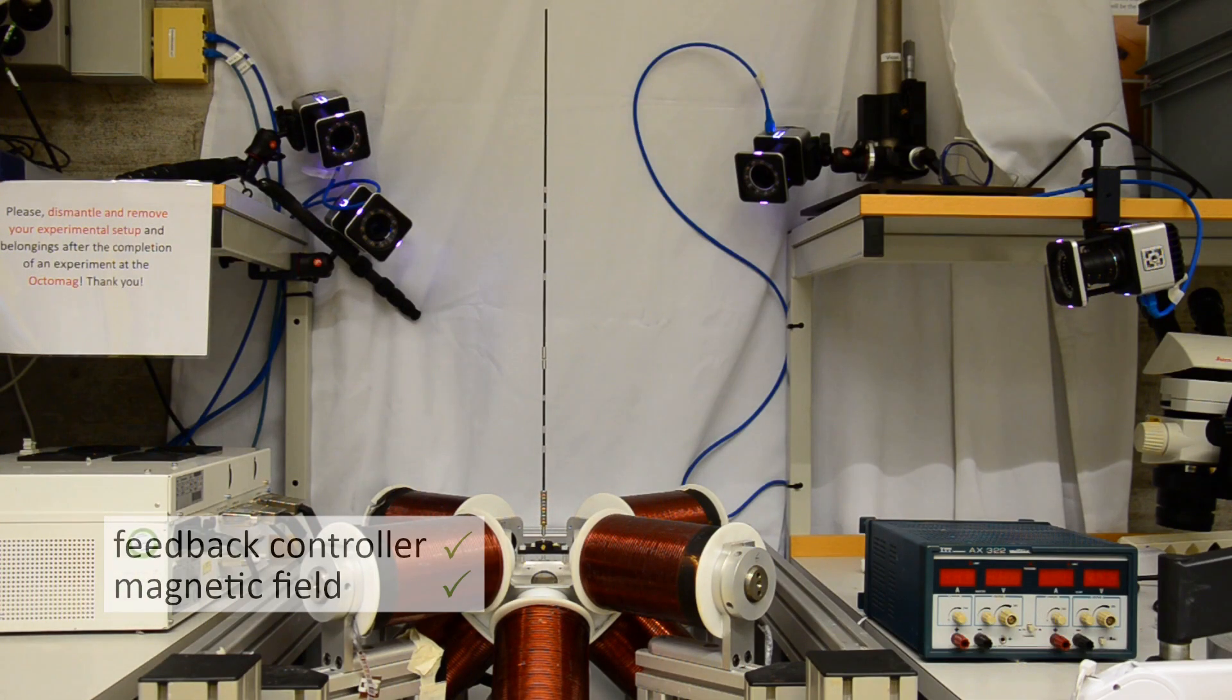To show you that we're not cheating, let's switch off the feedback controller and let the pendulum drop. And now let's also switch off the external magnetic field.